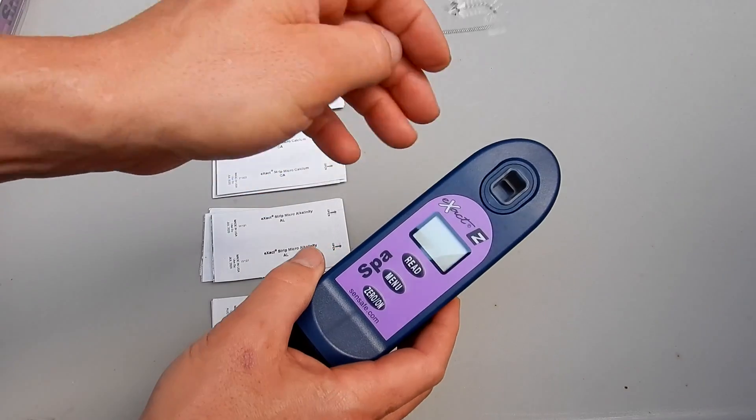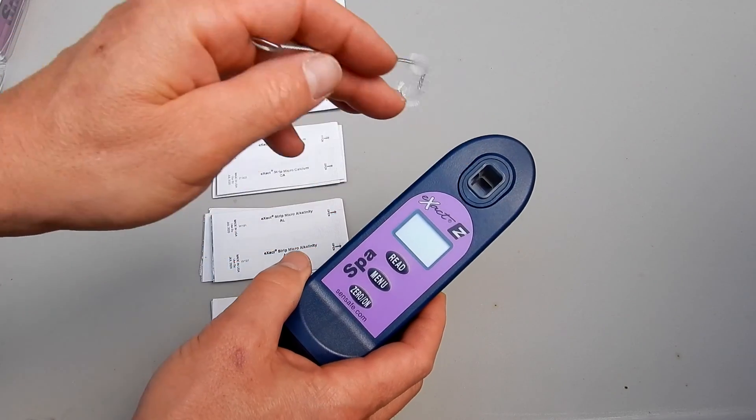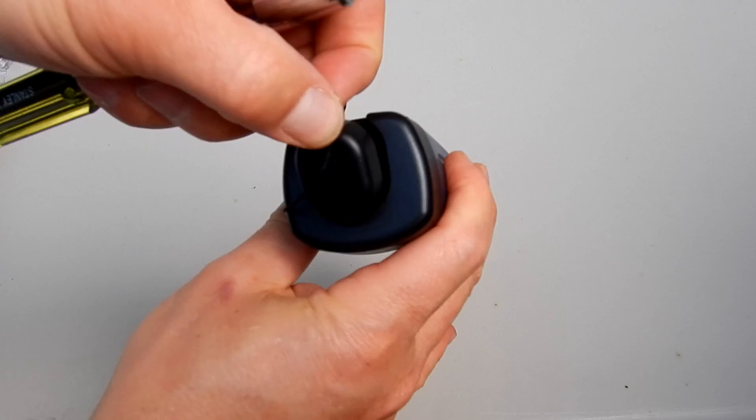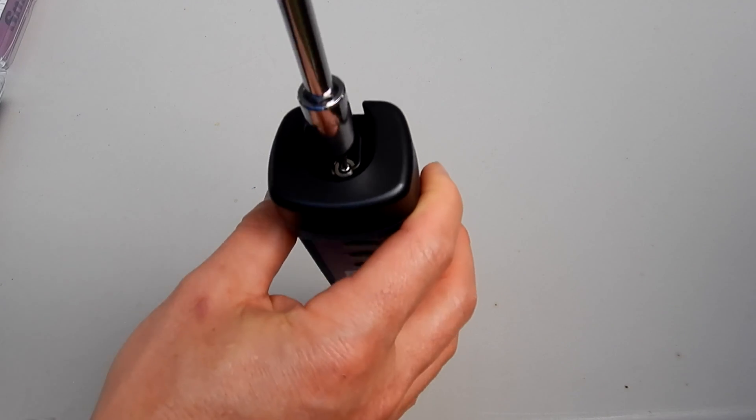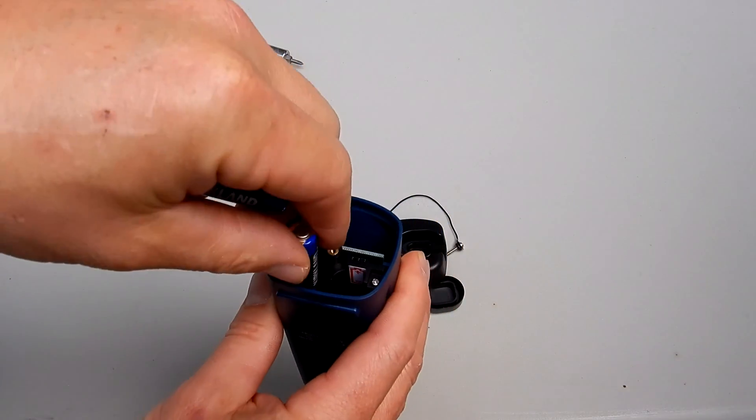Also included is this brush to clean the chamber in between testing. The first thing you want to do is remove the cap here. We're going to remove the screw here holding on the battery compartment and we'll insert the AAA batteries. You'll need four AAA batteries.